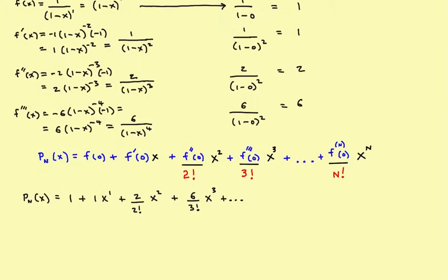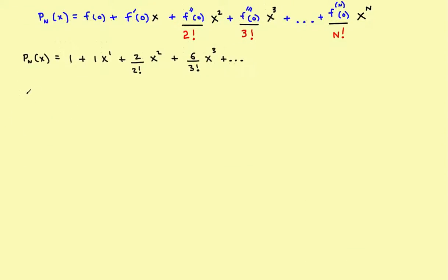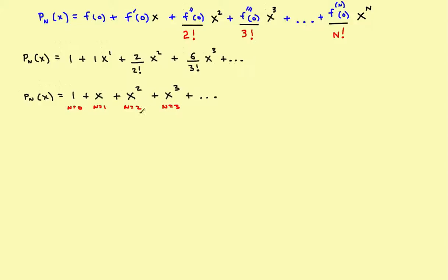Simplifying: the 1 stays, plus x, then 2 divided by 2 factorial is 1 so that's just x squared, and 6 divided by 3 factorial is 6 divided by 6 which is 1, so that's x cubed. Looking at the pattern — the zeroth, first, second, third terms — whatever n is, the exponent matches. So the general term is just x to the n, giving us the Taylor polynomial: 1 plus x plus x squared plus x cubed plus dot dot dot plus x to the n.